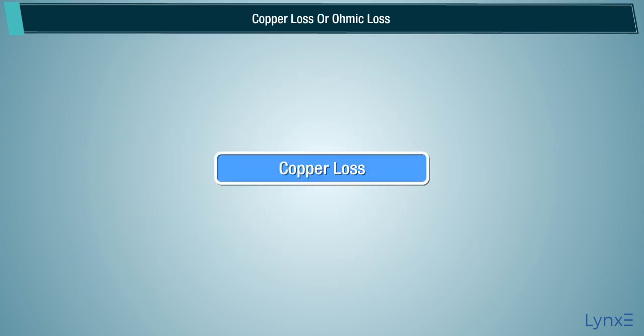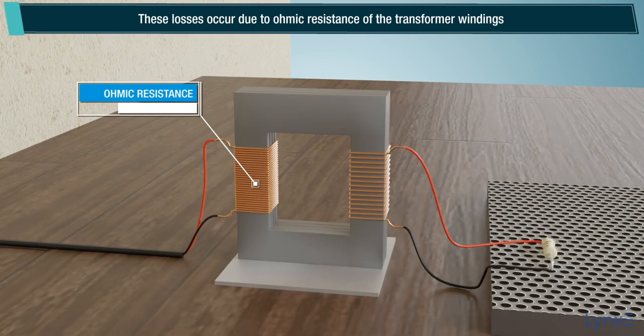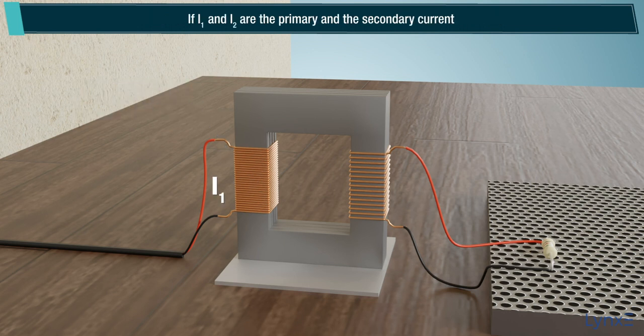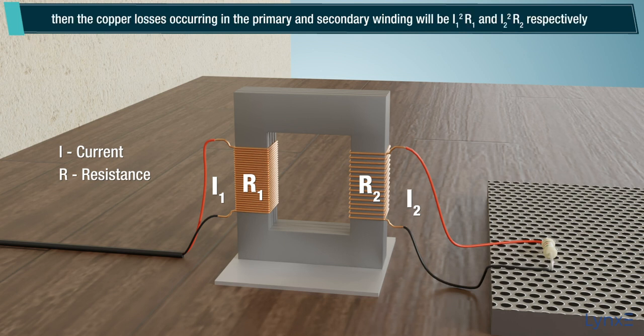Copper loss or ohmic loss. These losses occur due to ohmic resistance of the transformer windings. If I1 and I2 are the primary and the secondary current, R1 and R2 are the resistance of primary and secondary winding, then the copper losses occurring in the primary and secondary winding will be I1 square into R1 and I2 square into R2 respectively.